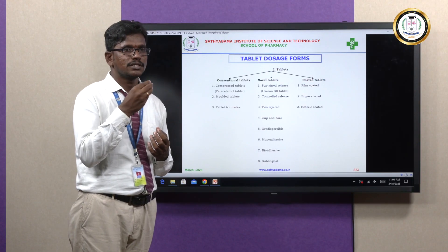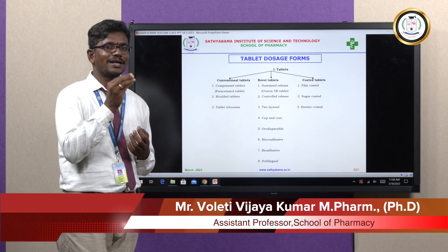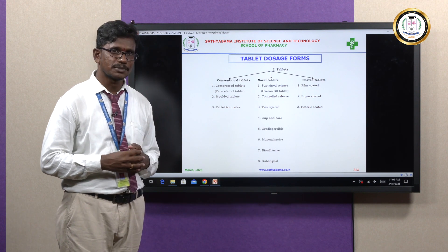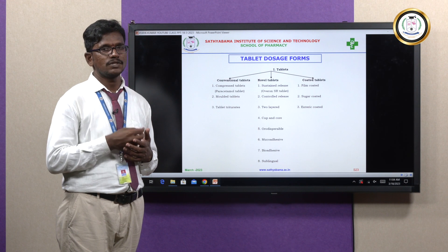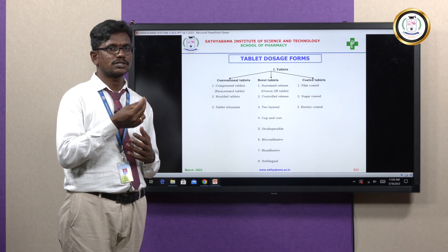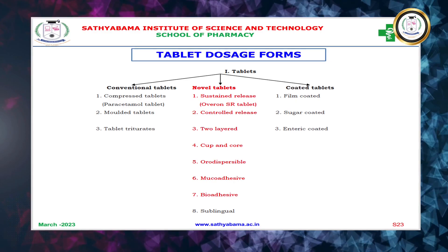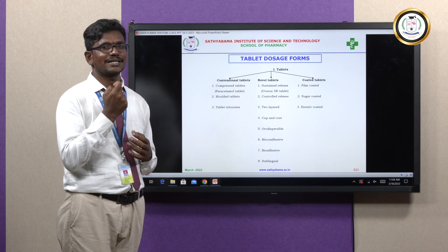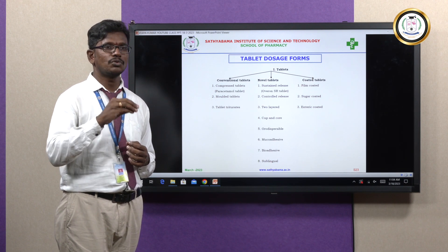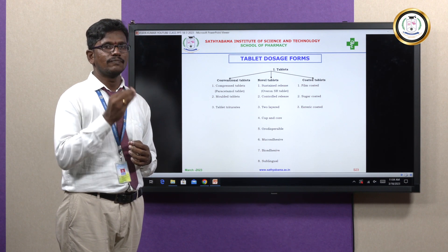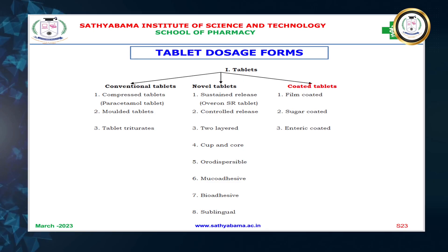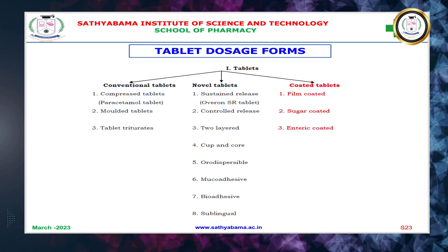Oro-dispersible tablets are placed in the oral cavity and quickly disintegrate for immediate action — mainly used in conditions of vomiting. Muco-adhesive tablets are kept inside the cheeks. Bio-adhesive tablets are also placed inside the oral cavity. Sublingual tablets are placed beneath the tongue — especially cardiac patients use aspirin and isosorbide dinitrate tablets sublingually. Coated tablets include film coated tablets, sugar coated tablets, and enteric coated tablets.